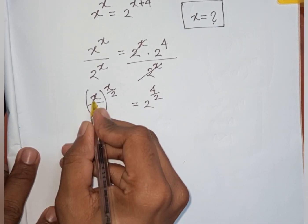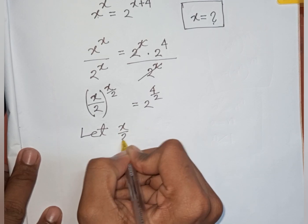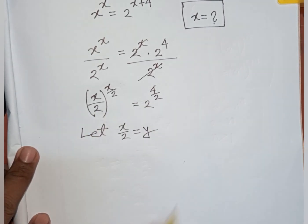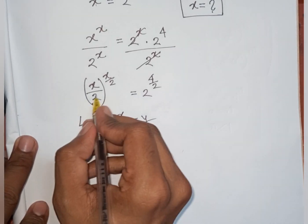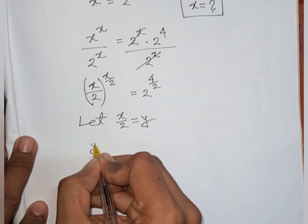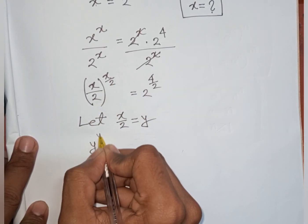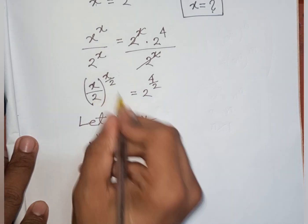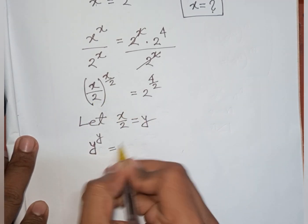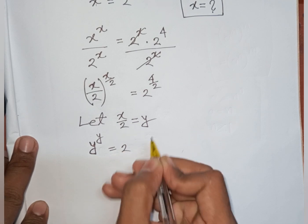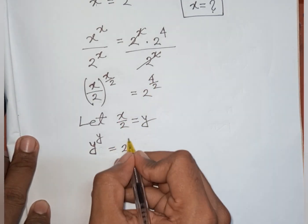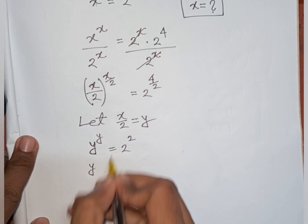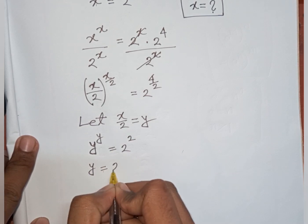Let x over 2 be substituted by y. So our equation becomes y power y equals 2 power 4 divided by 2, which means y power y equals 2 power 2. Therefore y equals 2.